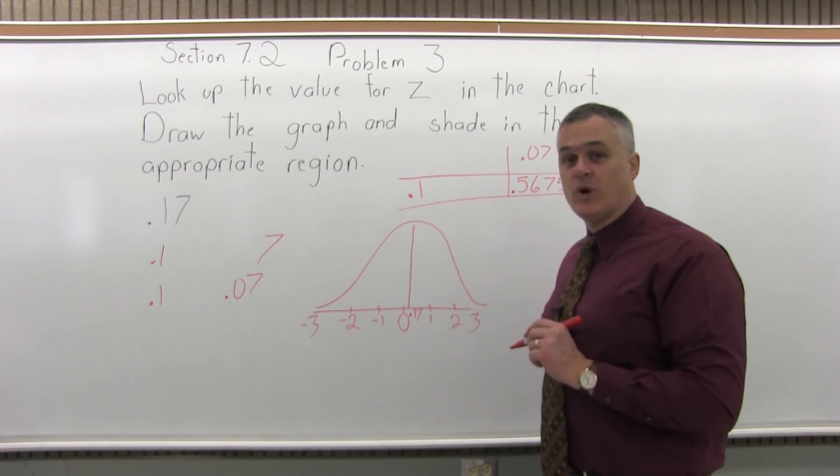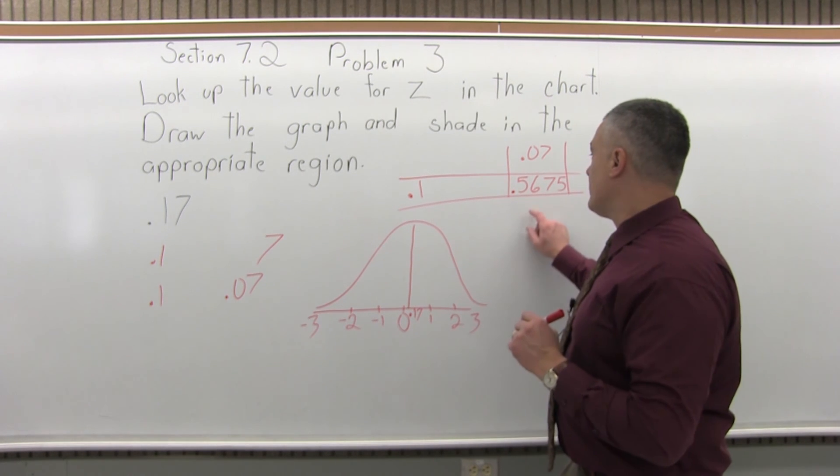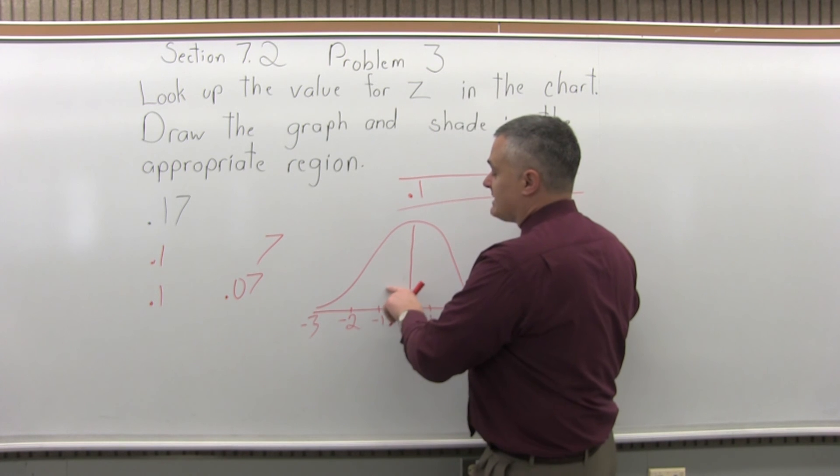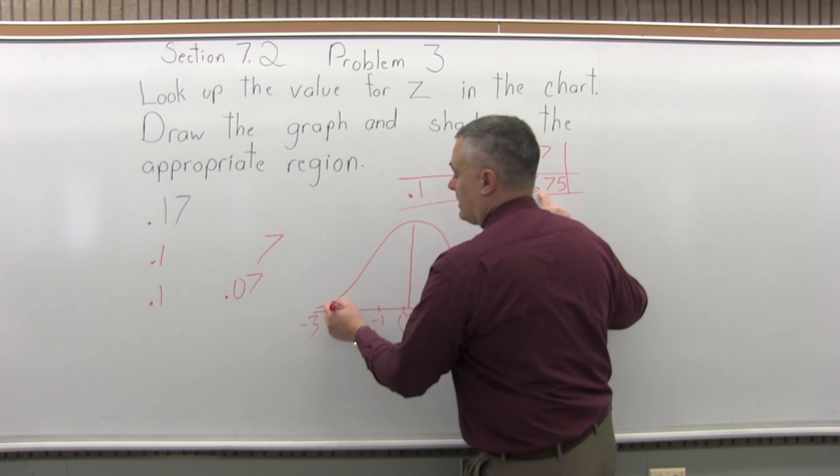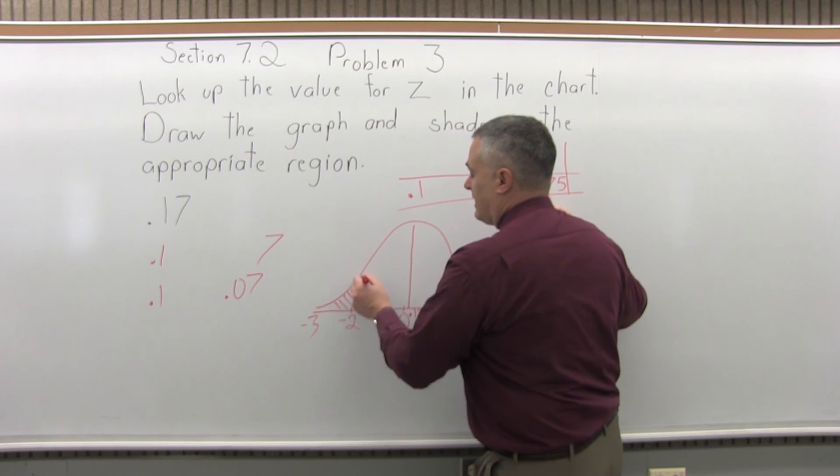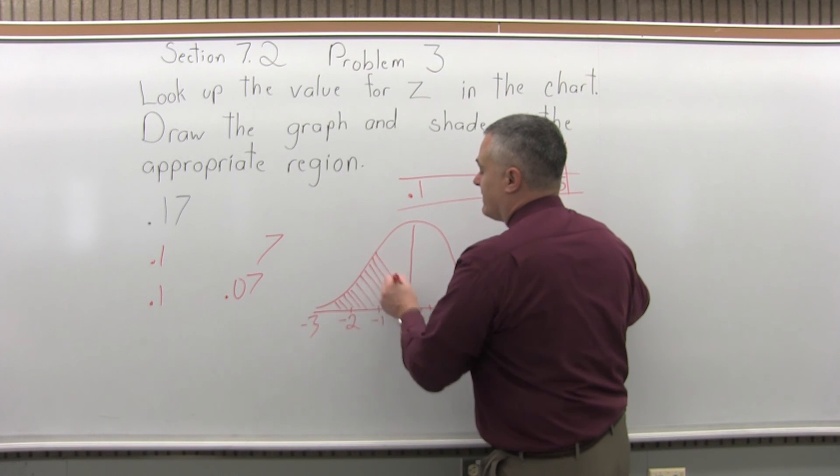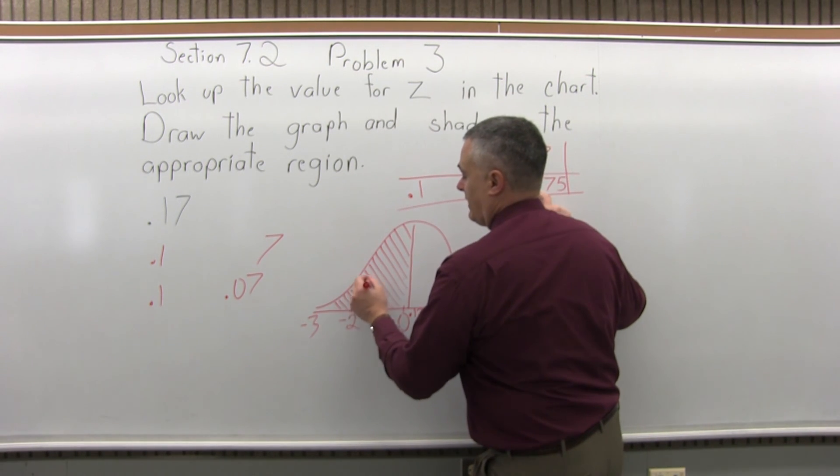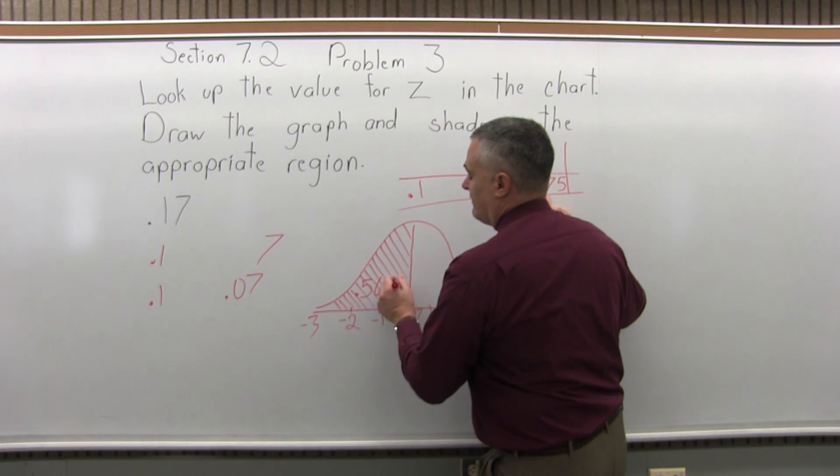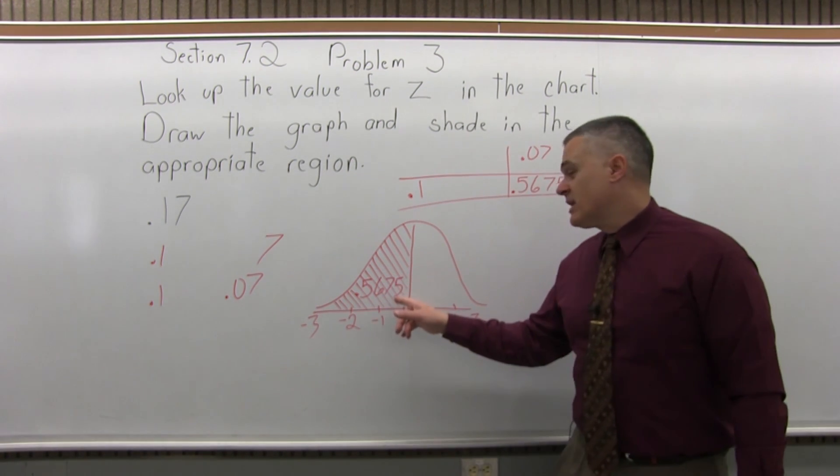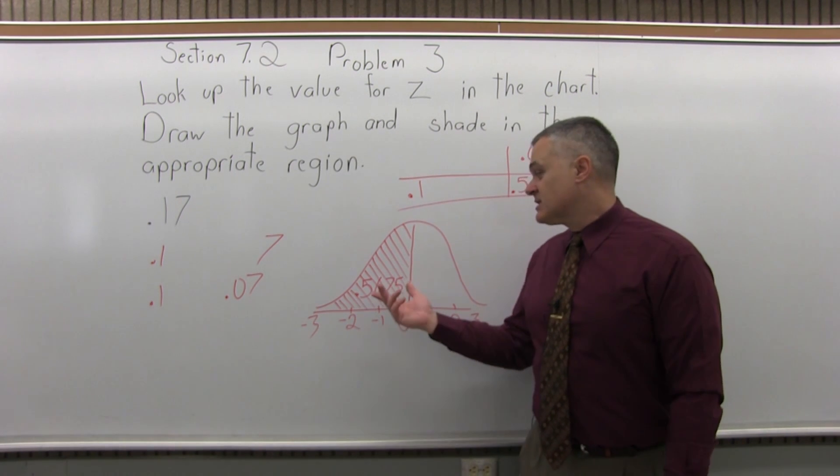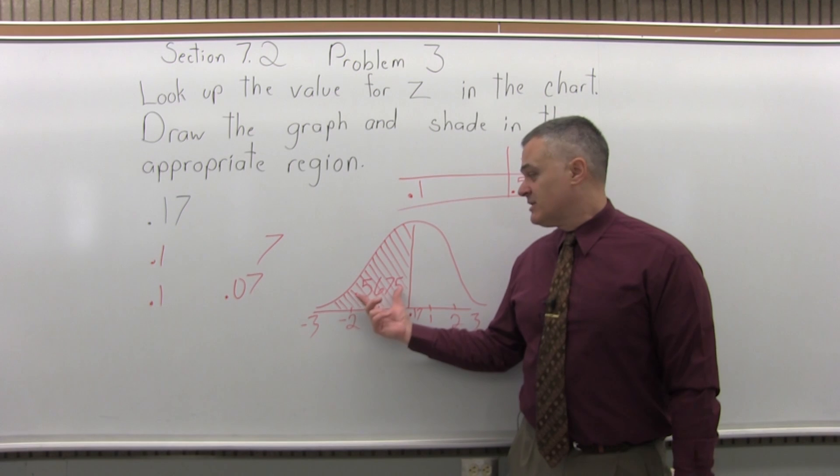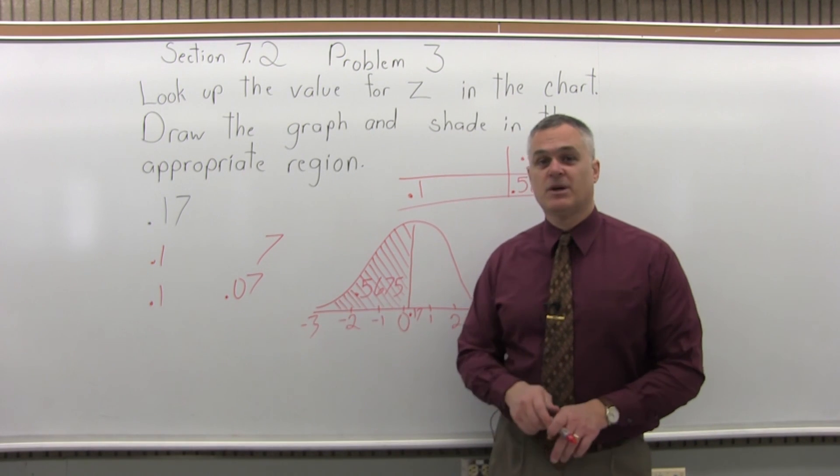That's what we looked up, .17 positive. Now the number we got out of the chart is the probability of being less than or to the left of the .17. So I'll shade in the area of the chart to the left. And I'll label it .5675. So if you like percents for your probability, it's a 56 and 3 quarter percent probability of being in the shaded region that's shaded on our bell curve.